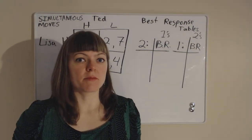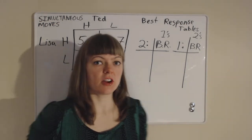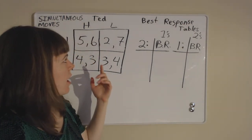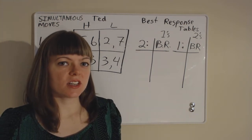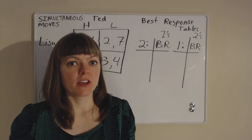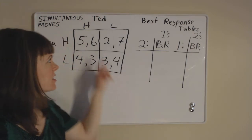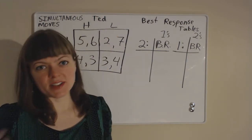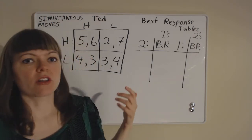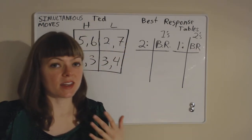I'm explaining game theory, in particular situations where two players are playing a game against each other in a simultaneous moves game. Simultaneous moves means both players make a decision, their decisions are revealed at the same time, and the players get a payoff. This is a general tutorial on how you read a game theory payoff matrix and find the Nash equilibrium.